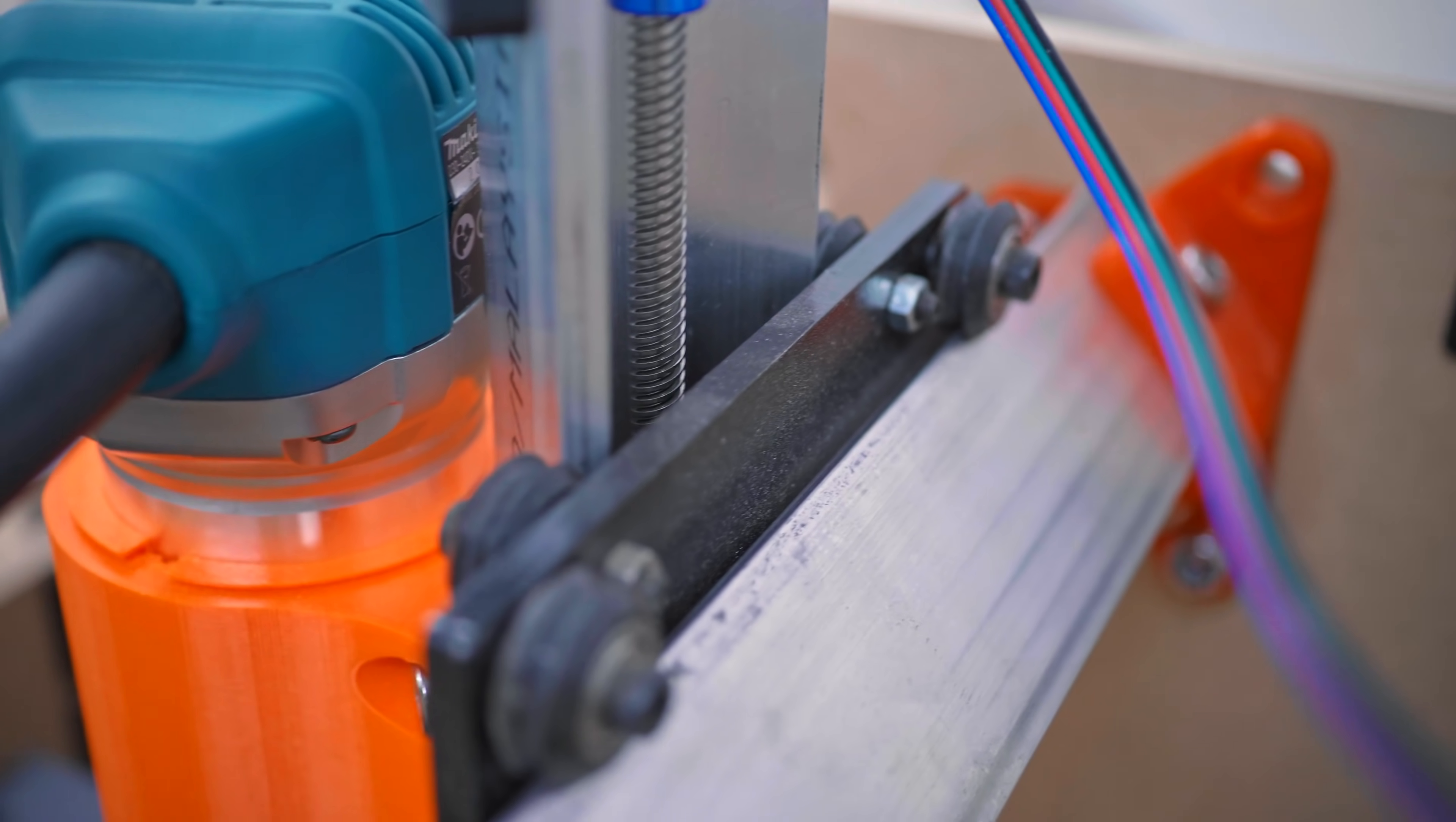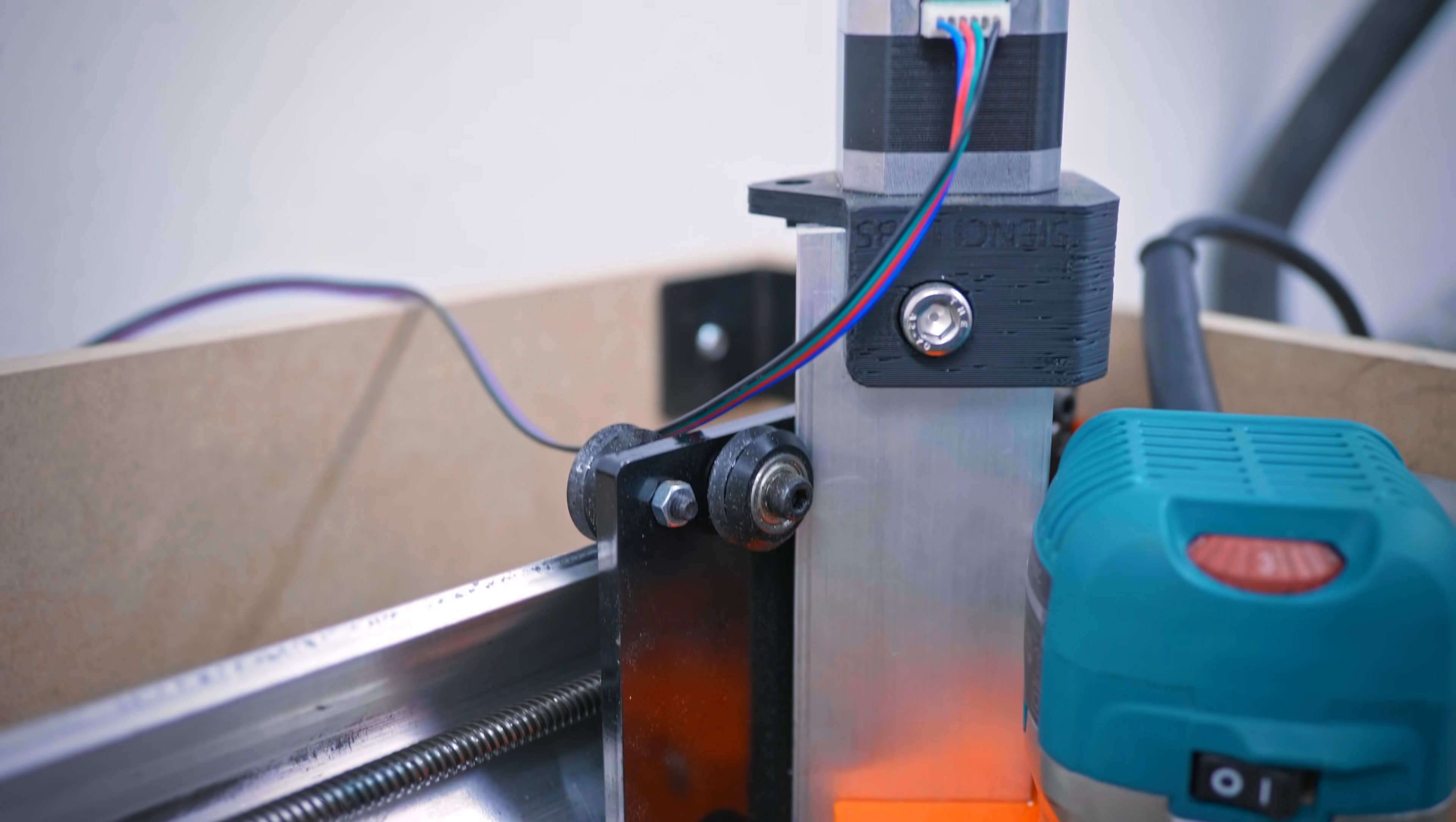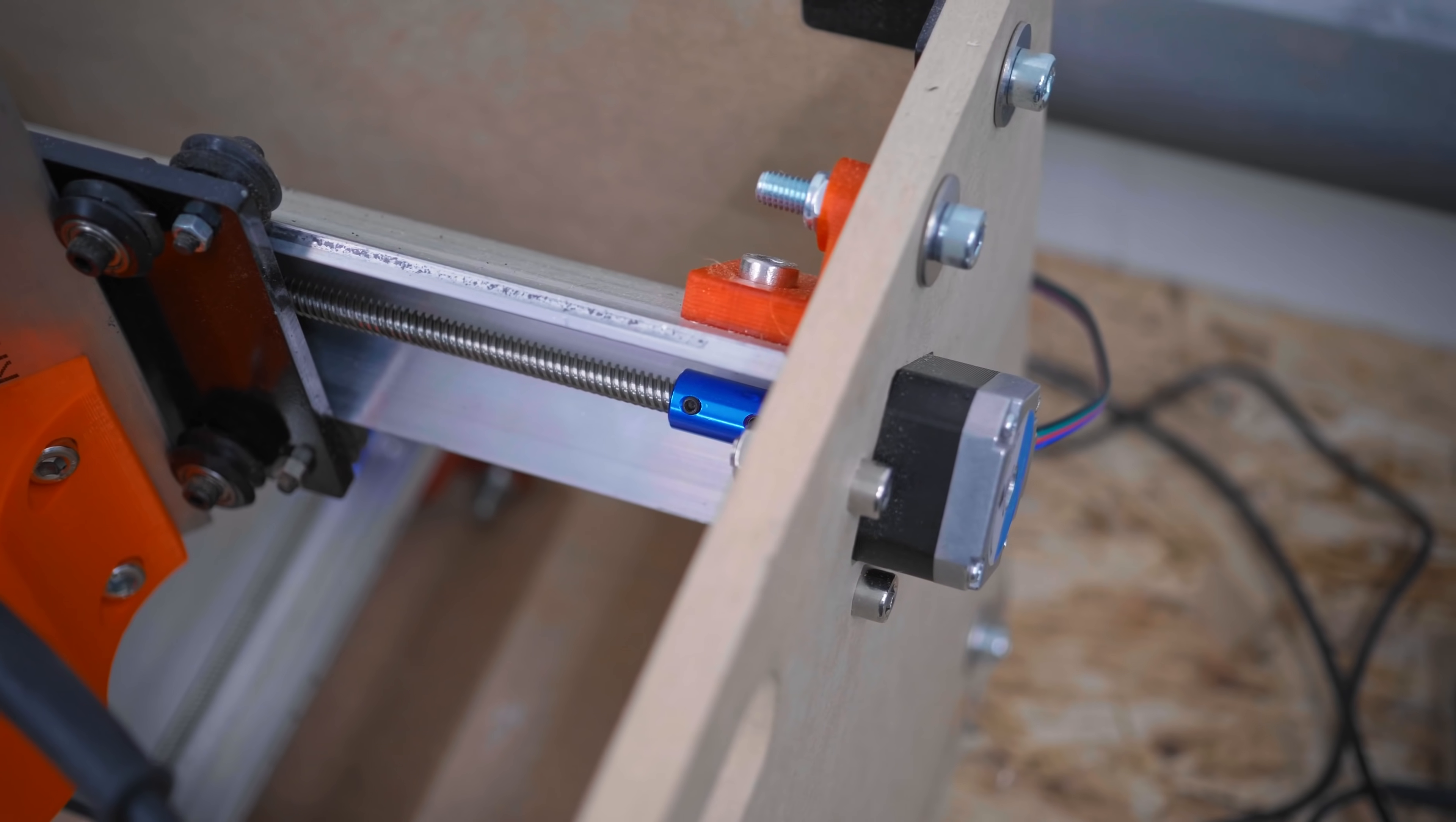So it's a main aluminum profile that they've got some open-build wheels running on, a lead screw in the center, some sort of a carriage that runs on it, and then these end brackets at the end that either bolt the track to the frame, as they do on this end, or hold a stepper motor to drive the lead screw, or both.